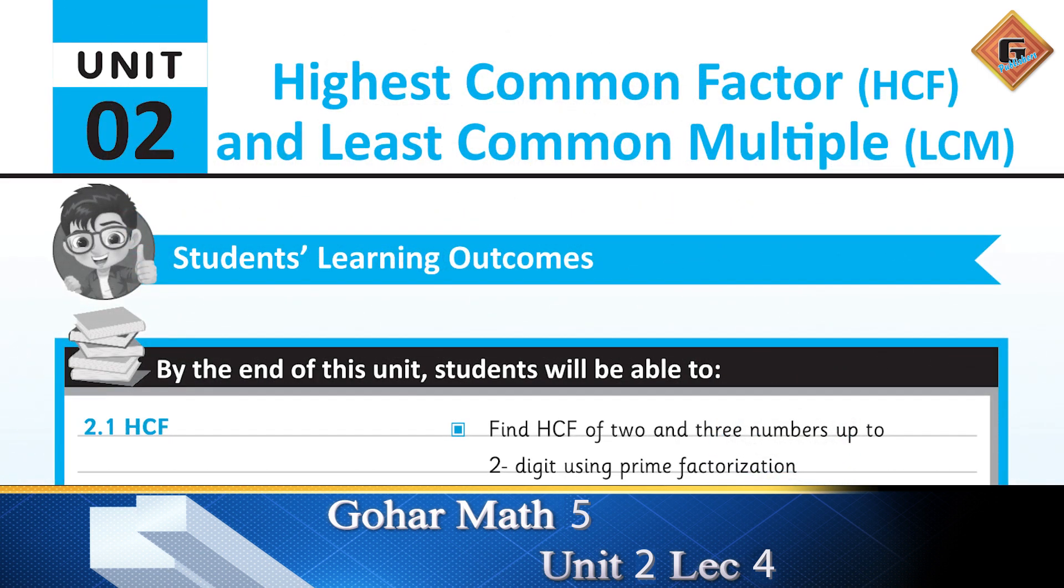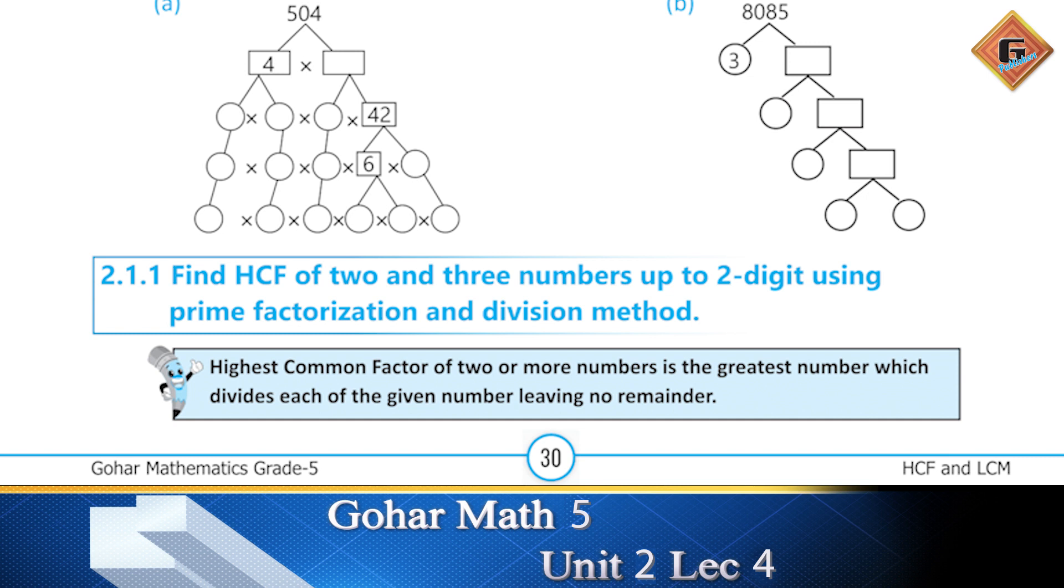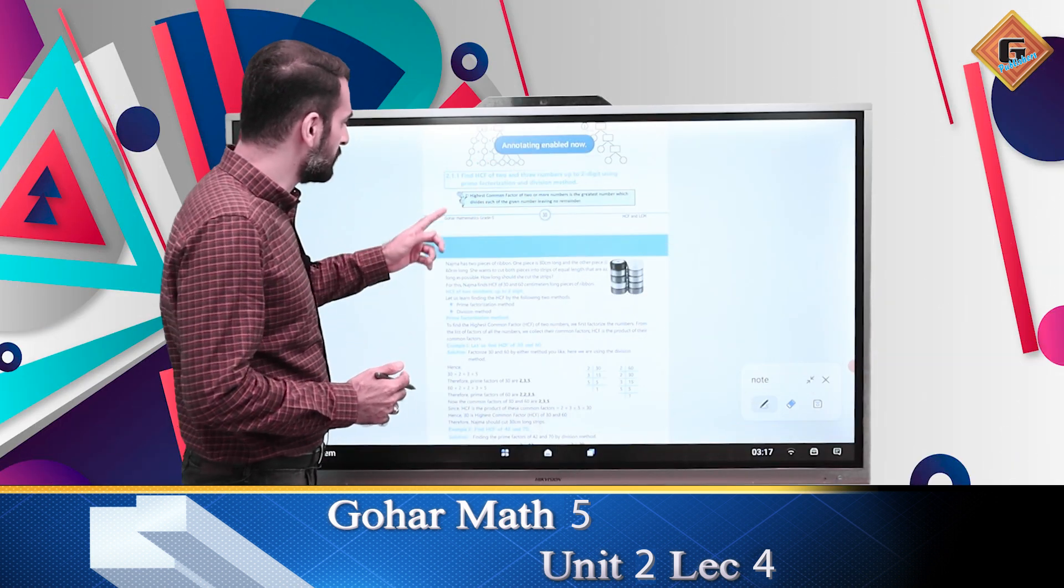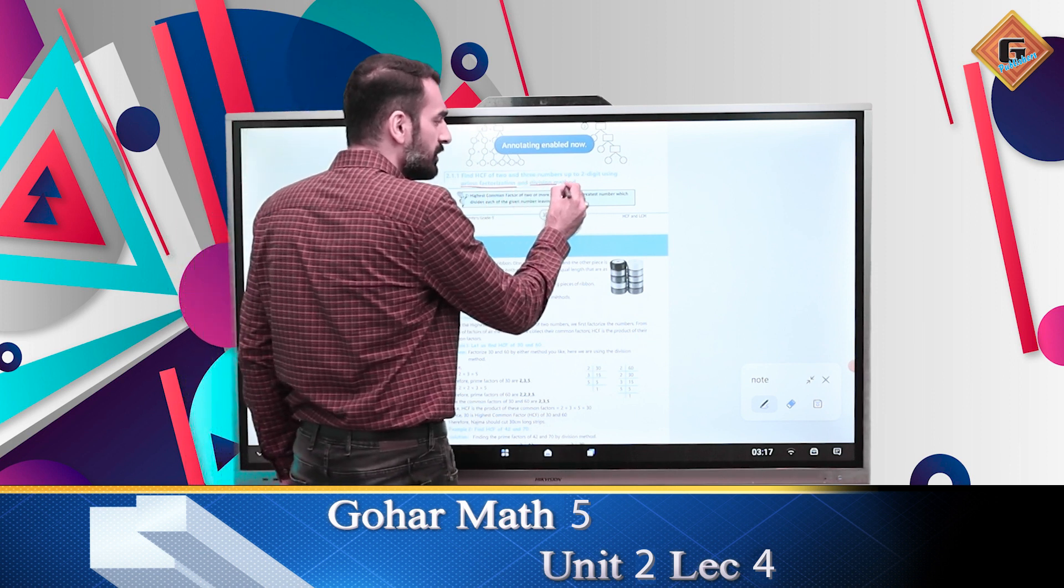Chapter number 2: HCF and LCM. The topic is finding the HCF of 2 and 3 numbers up to 2 digits using prime factorization and division method. We have the prime factorization method which we have done before, and the division method.